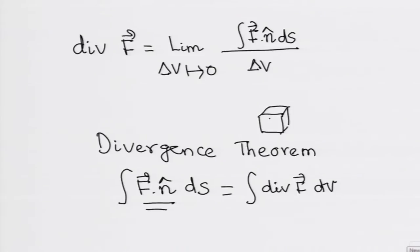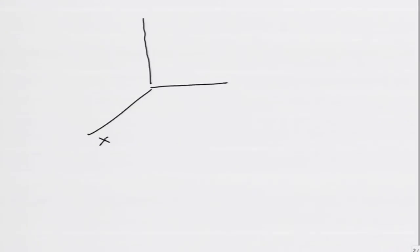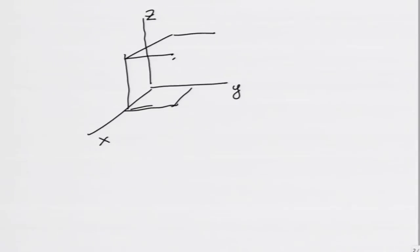Let us see whether this divergence is the same as what you have learnt in your calculus. I will take for simplicity a cube, oriented along the axes, with intercepts delta x on the x-axis, delta y on the y-axis, and delta z on the z-axis.